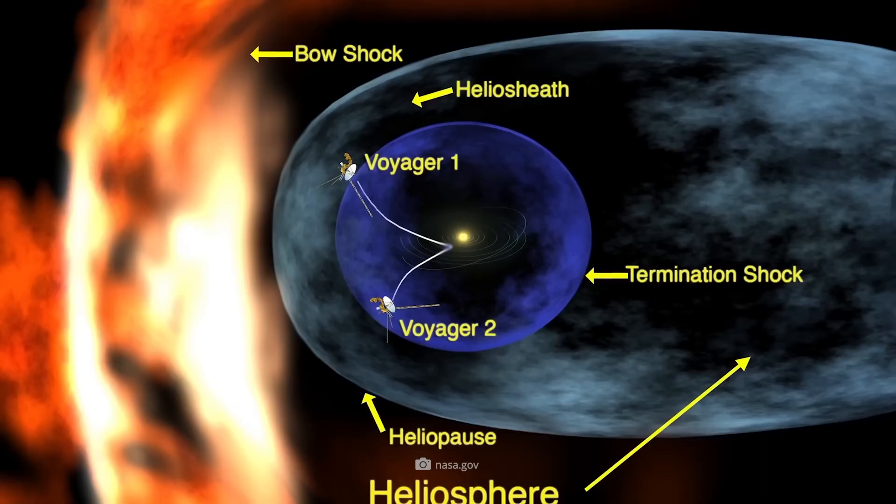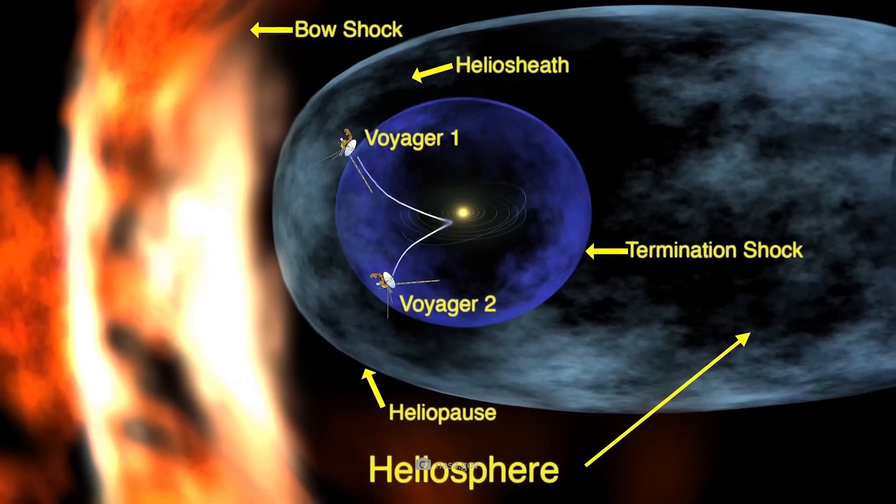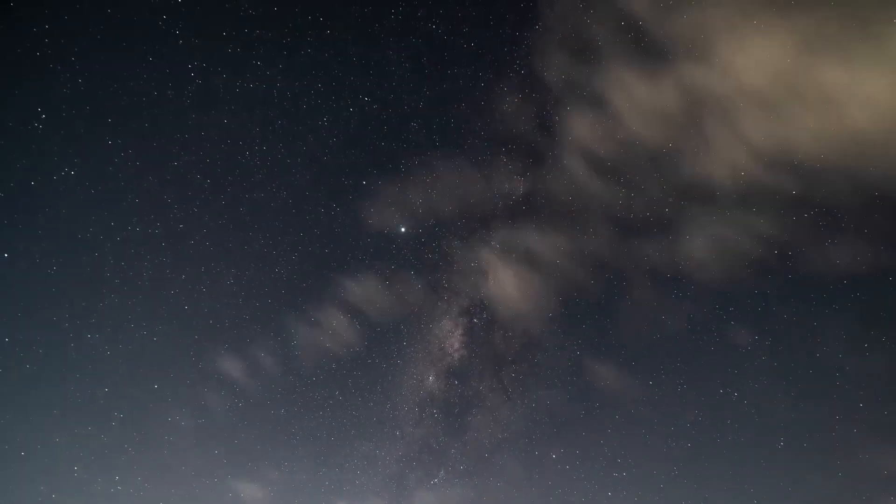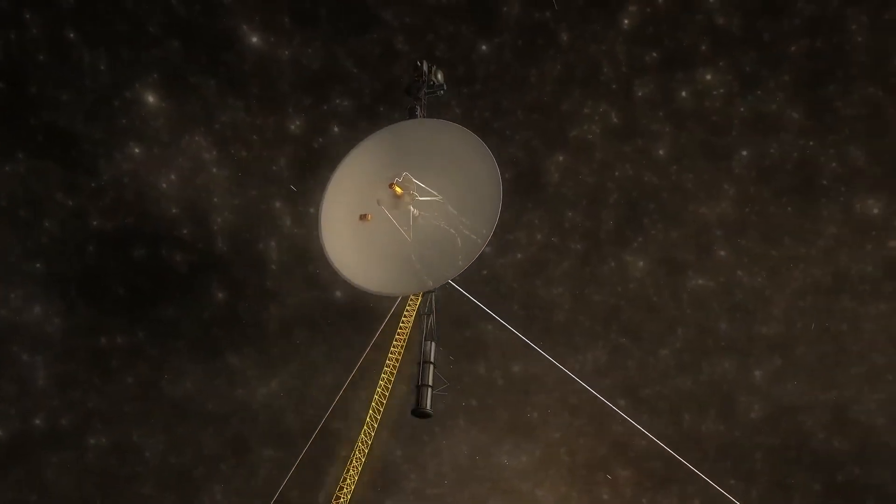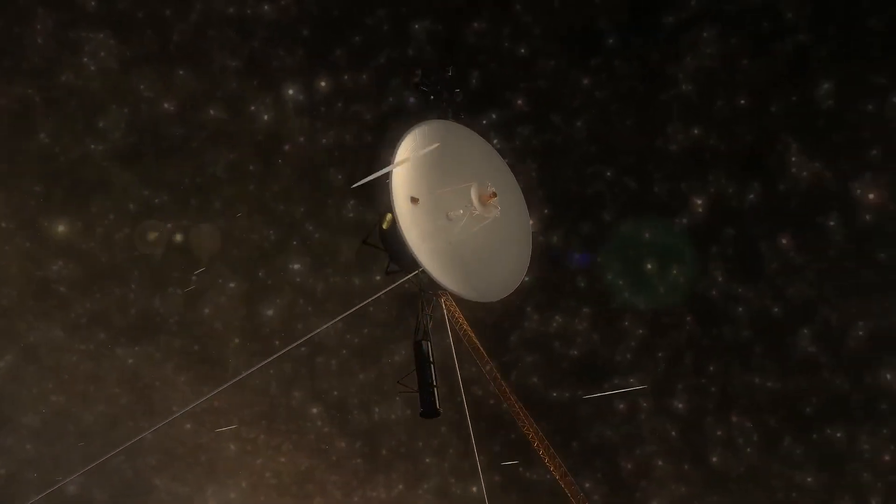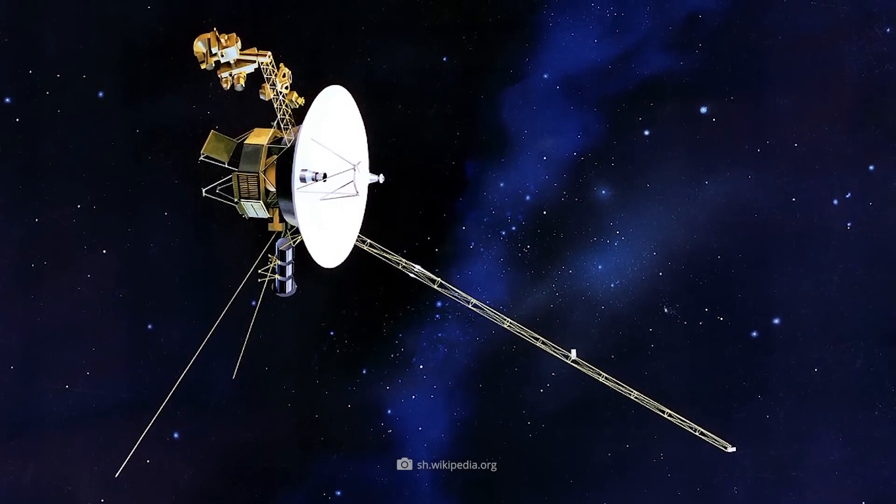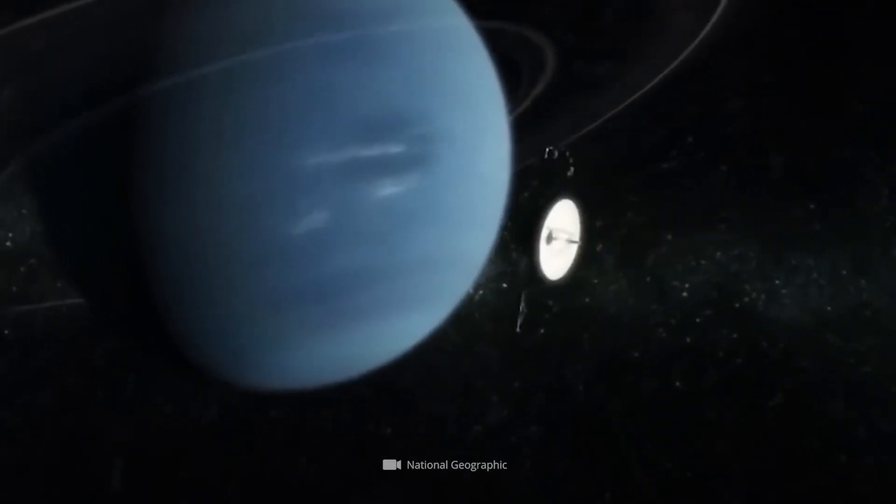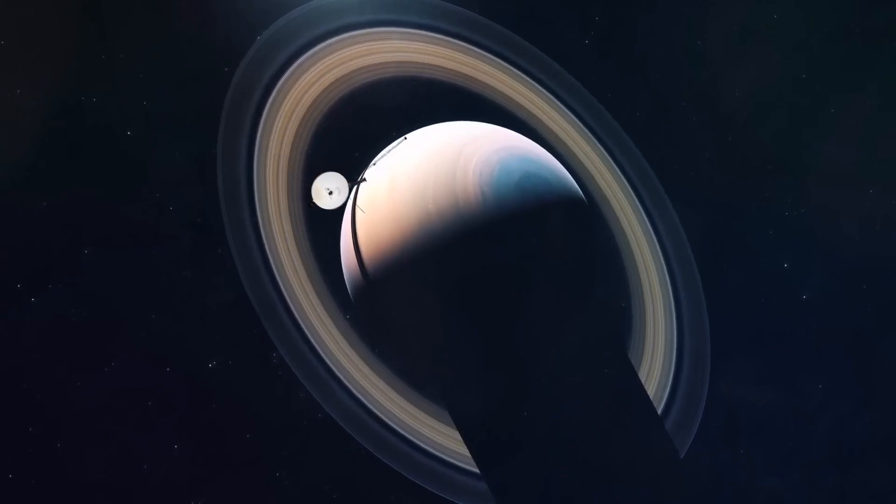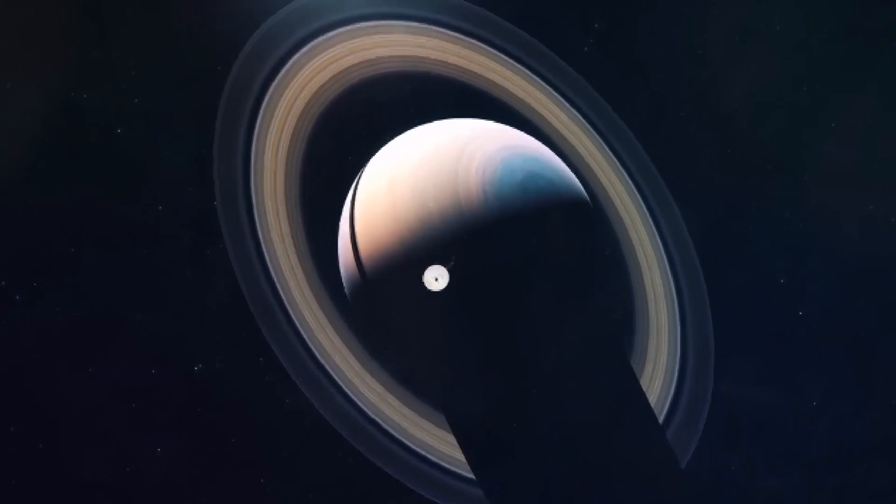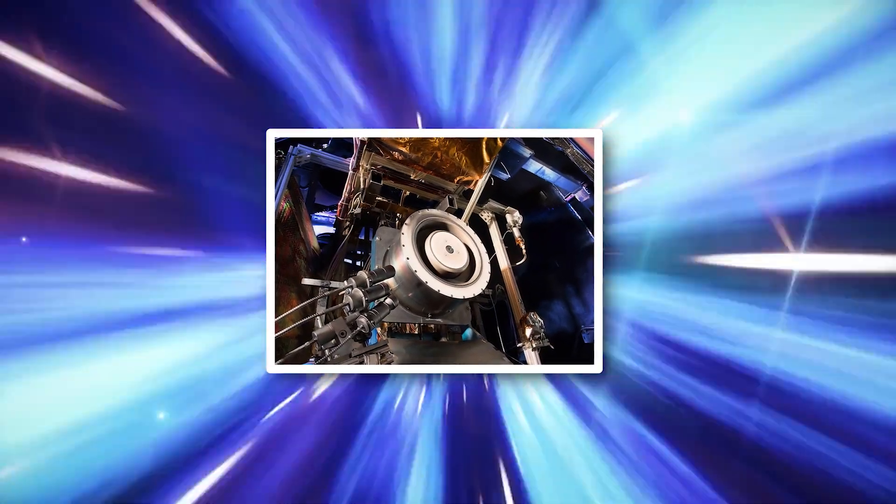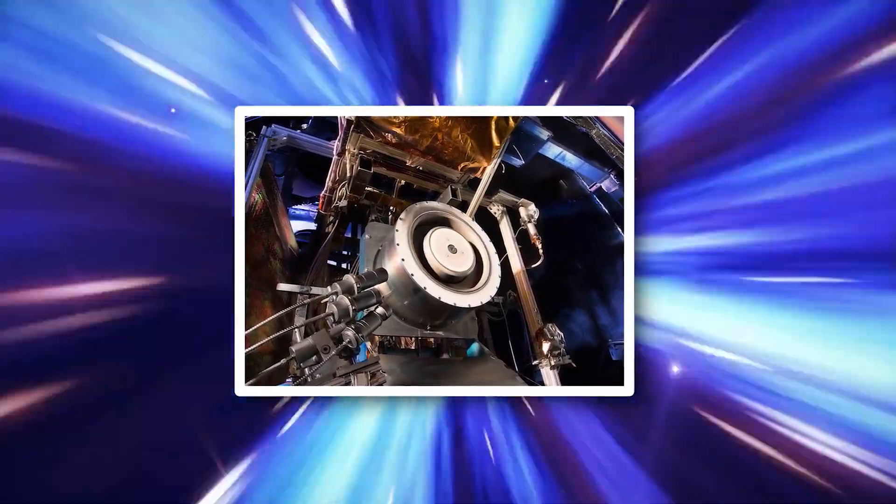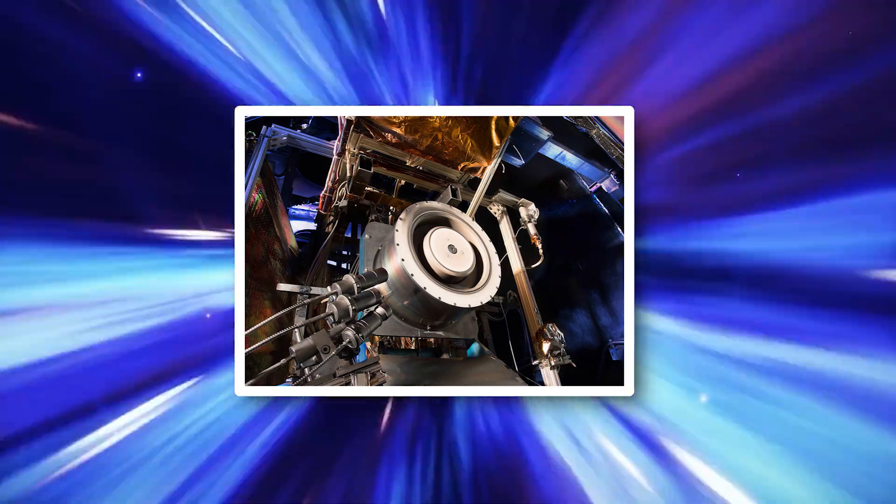For instance, NASA reported in December 2017 that Voyager 1 had successfully repositioned itself to speak with Earth using its backup thrusters. Since Voyager 1's flyby of Saturn in November 1980, this trajectory correction maneuver (TCM) thrusters have not been deployed. Since then, the spacecraft has primarily swung into the proper orientation for communication with Earth using its standard attitude control thrusters. However, NASA decided to test the TCM thrusters, which could increase Voyager 1's operational life as the attitude control thrusters' performance deteriorated.